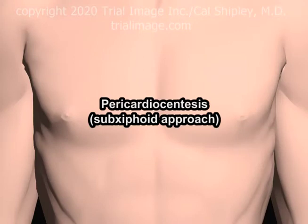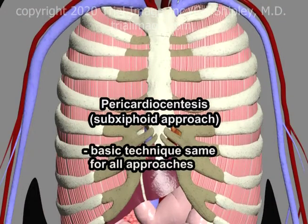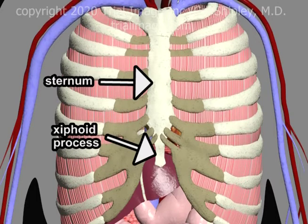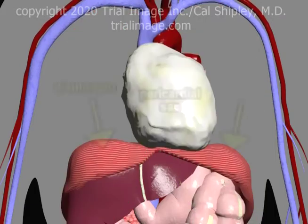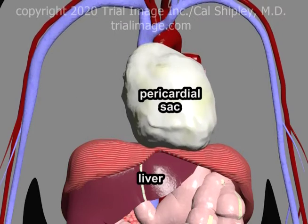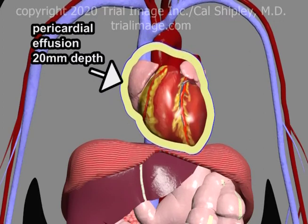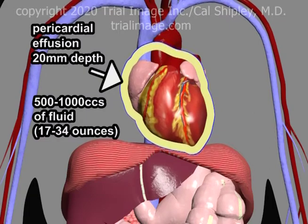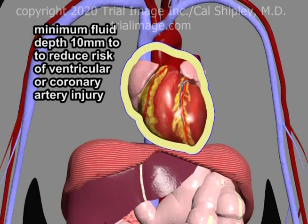To look at the nuts and bolts of the pericardiocentesis procedure itself, I'm going to use as an example the sub-xiphoid approach. Please note that with the exception of the insertion point and the aiming of the needle, the technique is the same regardless of the approach used. Let's start with a quick recap of the relevant anatomy. The xiphoid process projects from the bottom of the sternum. The pericardial sac rests on top of the diaphragm, and positioned just below the diaphragm is the liver. For this example, I'm going to use an effusion which is symmetrically distributed and is 20 millimeters in depth, corresponding to an effusion volume of about 500 to 1,000 cc's of fluid. In order to reduce the risk of needle puncture or laceration of cardiac chambers or coronary arteries, the targeted area of the effusion should be at least 10 millimeters in depth.